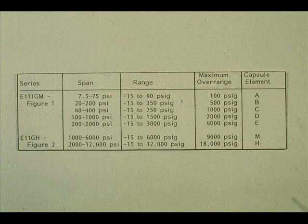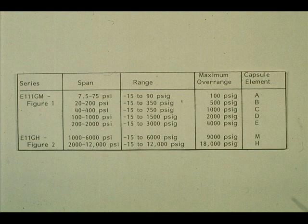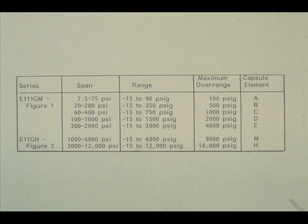Table 1 shows the various spans, ranges, maximum overrange, and required elements for particular conditions. The five capsules, A through E, are interchangeable for the 11 GM. From the table, it is evident that overlapping is provided between the spans and ranges.